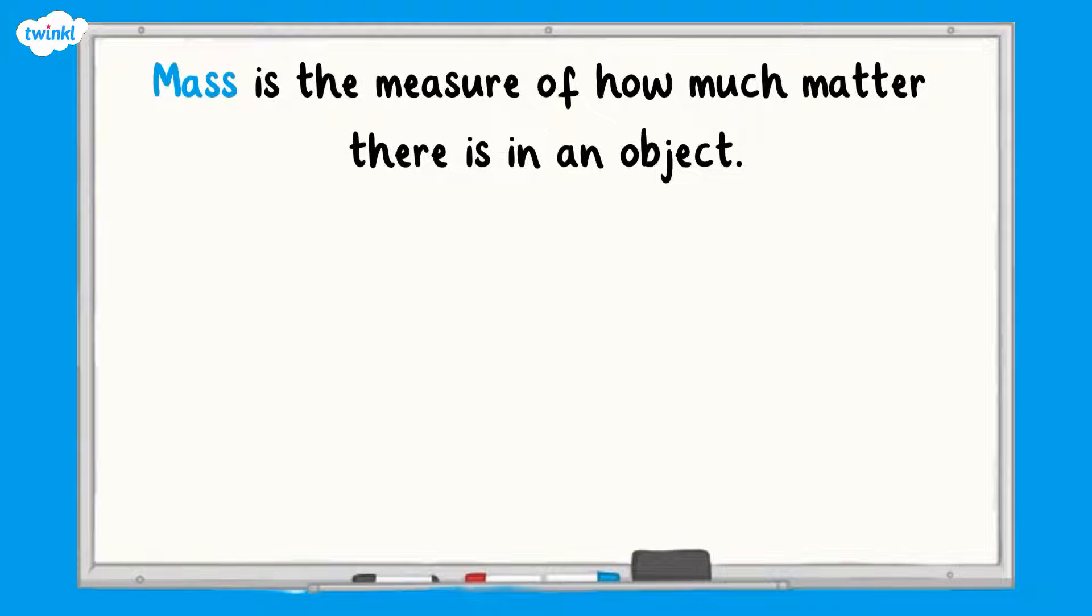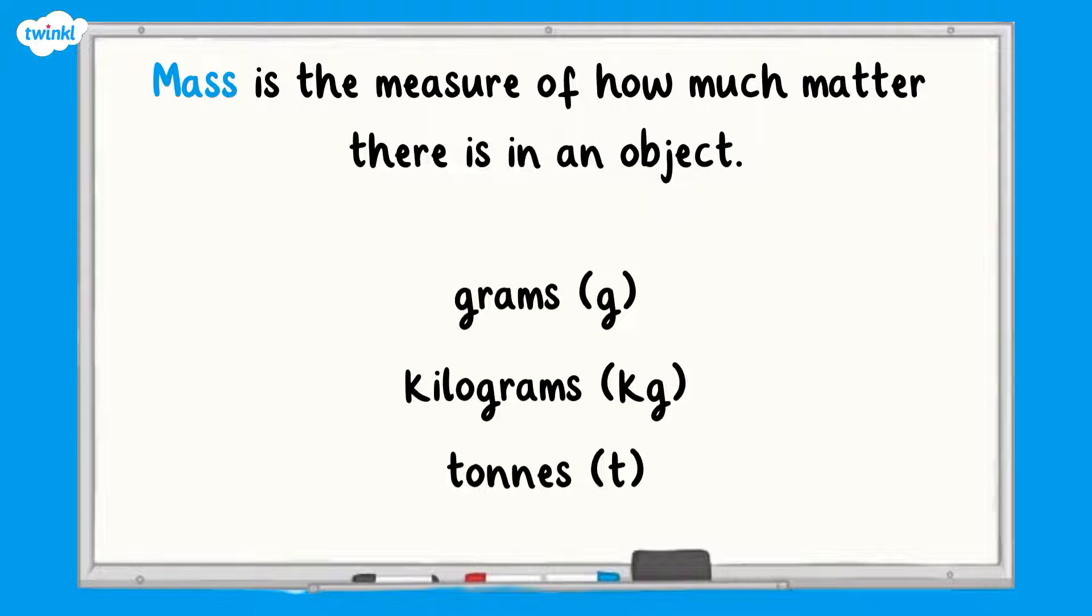Mass is the measure of how much matter there is in an object and can be measured in grams, kilograms and tonnes. It is worth noting that mass and weight are not the same thing. The mass of an object always remains constant but the weight of an object depends on the gravitational force acting upon it.